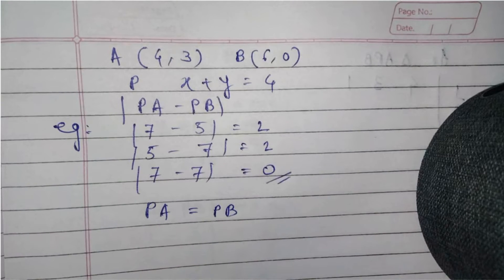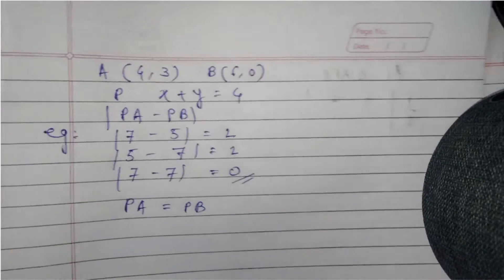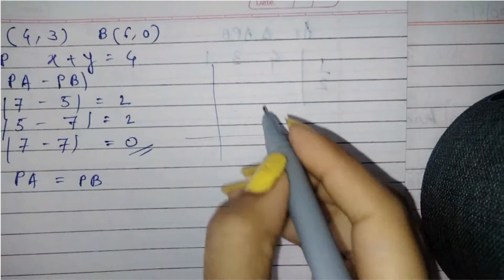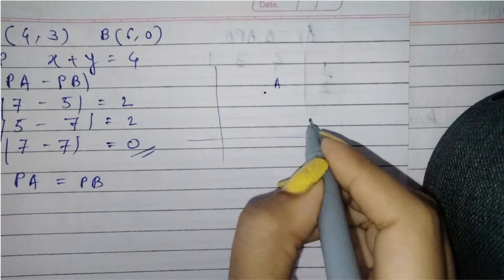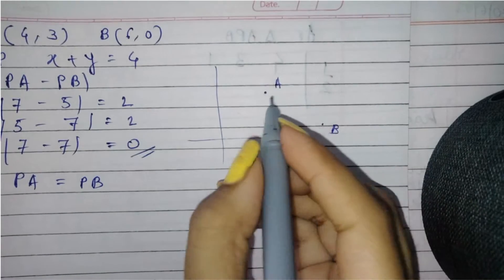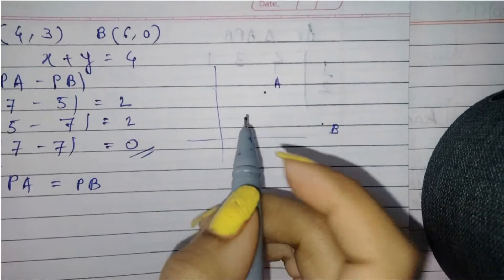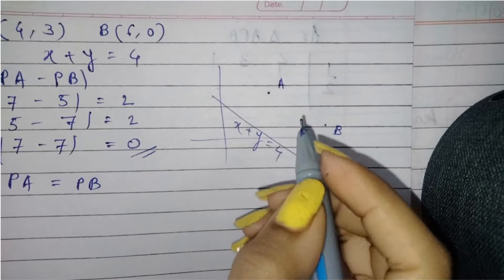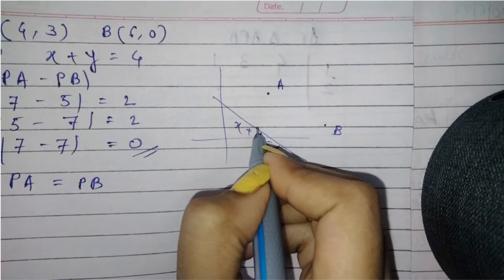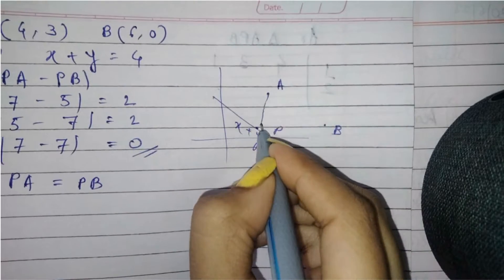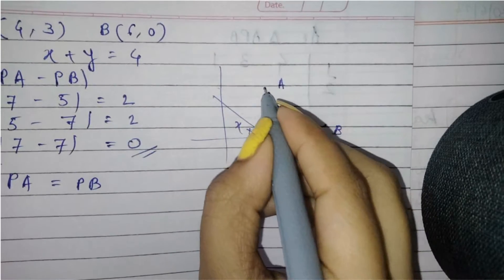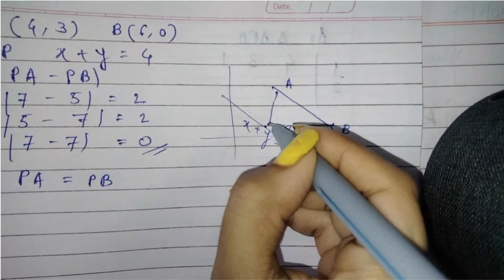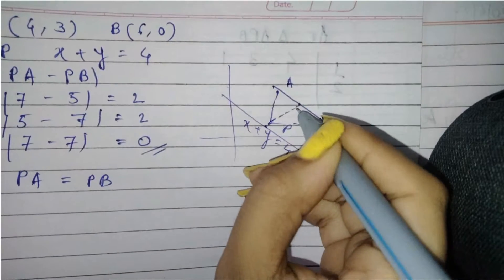Let us make a rough diagram of what the question depicts. If this is point A and this is point B, and this is the line x + y = 4, this is a rough representation. P is a point on this line, then PA should equal PB, and P would be the foot of the perpendicular on AB.